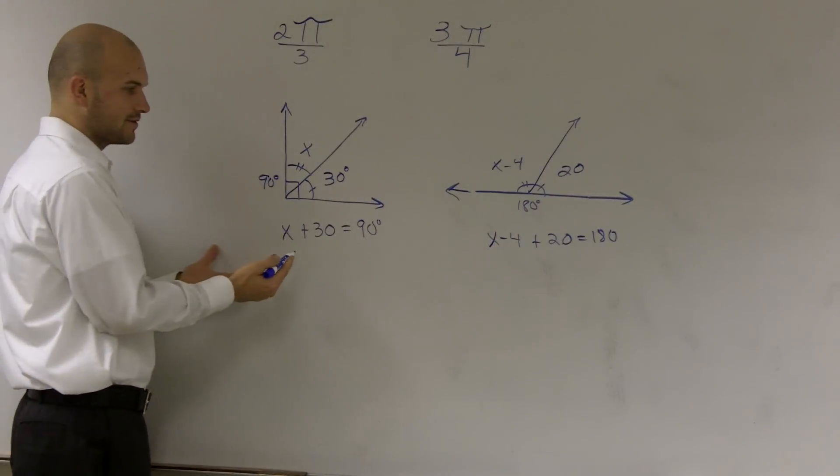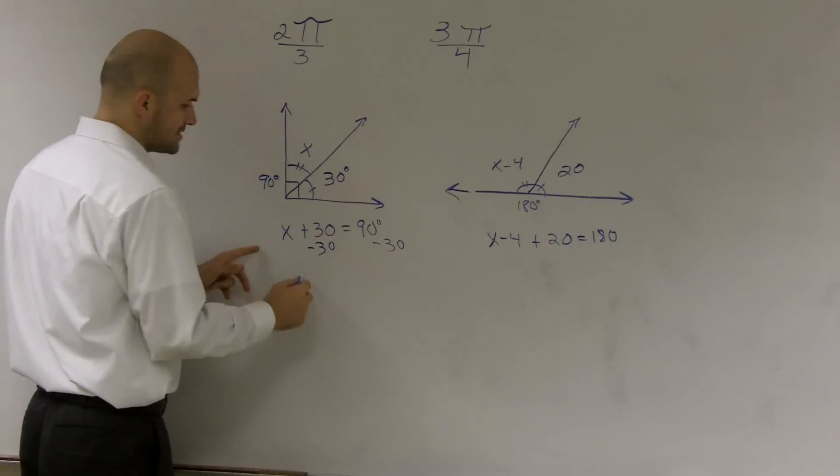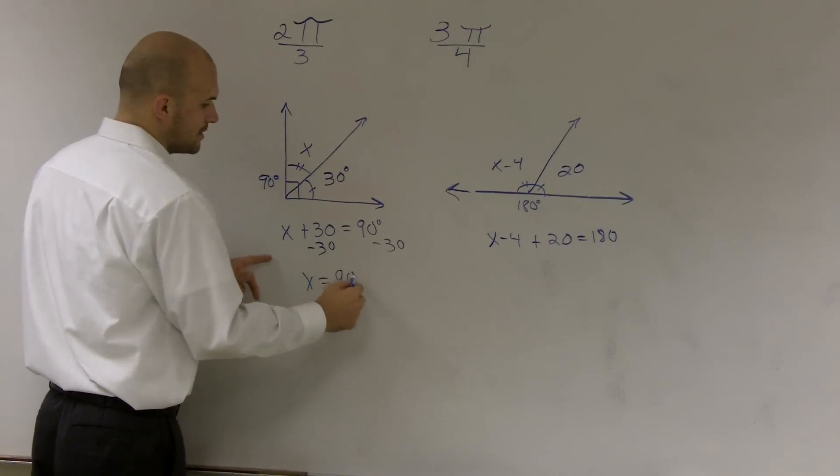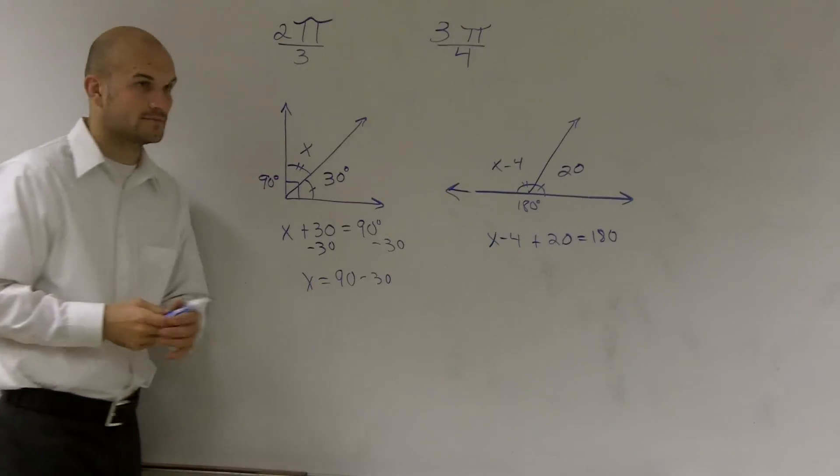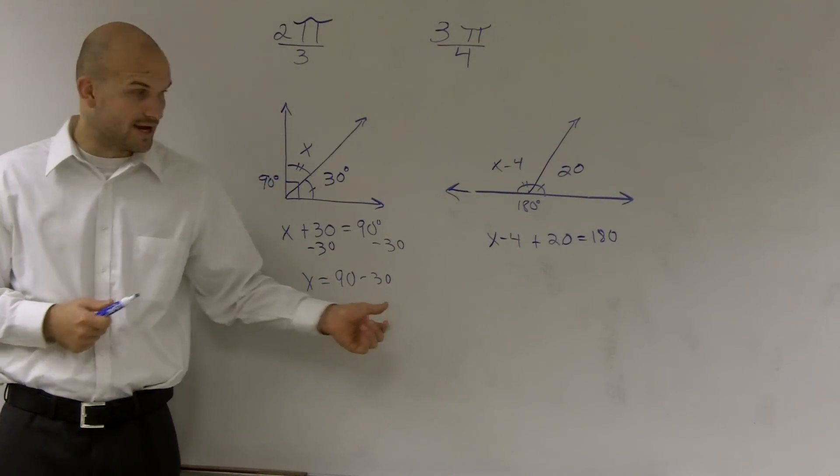So, what I would do to solve for this, I'd say 90 minus 30. I'd say x equals 90 minus 30. So, my angle is whatever 90 degree is minus the angle that I know.